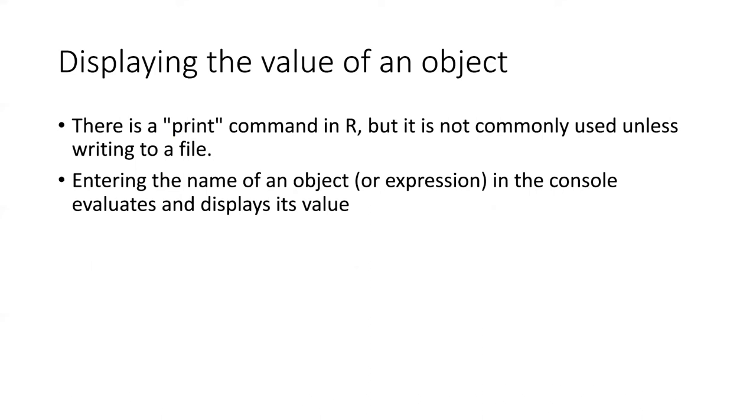So in most languages, an important feature is trying to figure out what is the current value of an object or what does a variable contain. Most languages have a print command, but in R it's not that commonly used. There is a print command, but usually it's used if you're writing to a file. More commonly you simply place the name of the object into the console and press enter, and then that will evaluate if it's an expression or just display its value if it is an object.